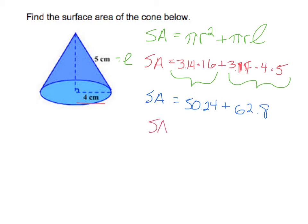And then we're going to add to that by doing 3.14 times 4 times 5. And that's 62.8. So now we will add these two numbers together. So 62.8 plus 50.24. And that's going to be 113.04. And our label is centimeters squared because it is surface area.